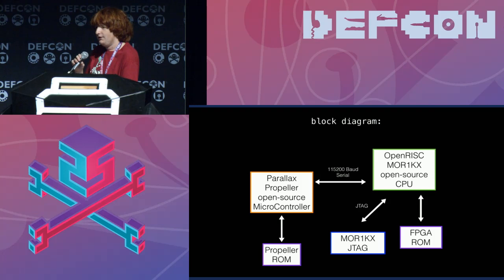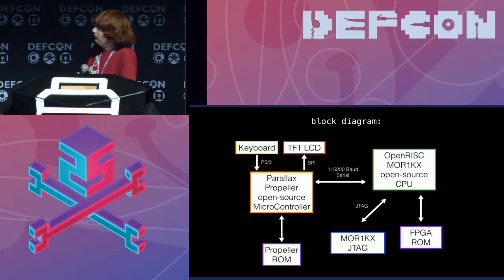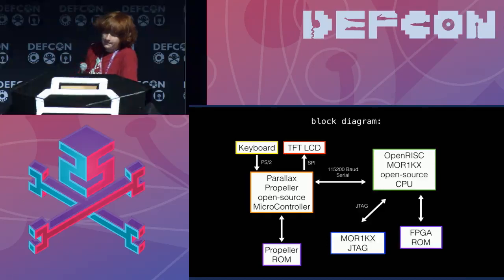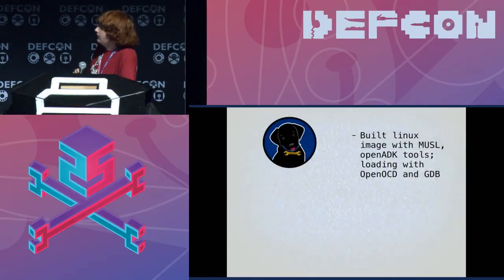And then to actually interact with this system, we're going to add a keyboard over PS/2 and a TFT LCD over SPI. Linux's image is built with the musl toolchains available for OpenRISC.